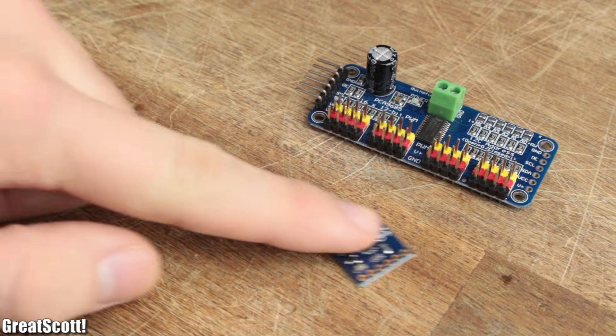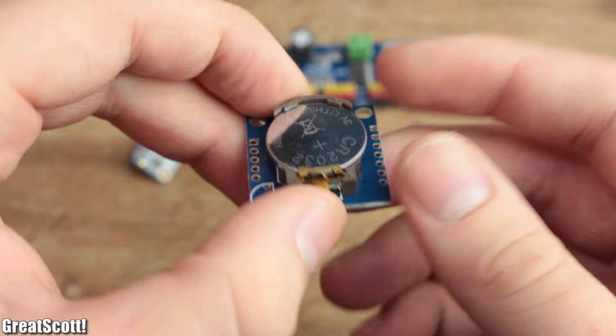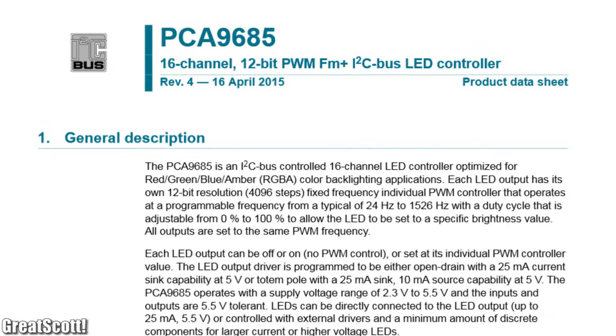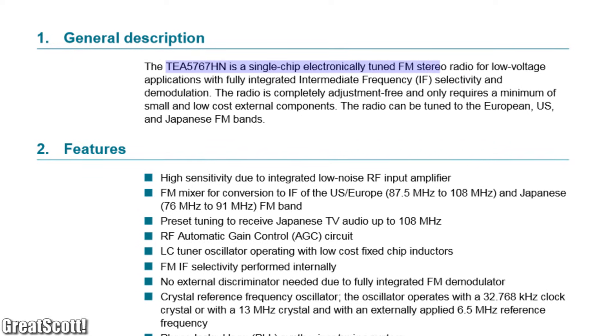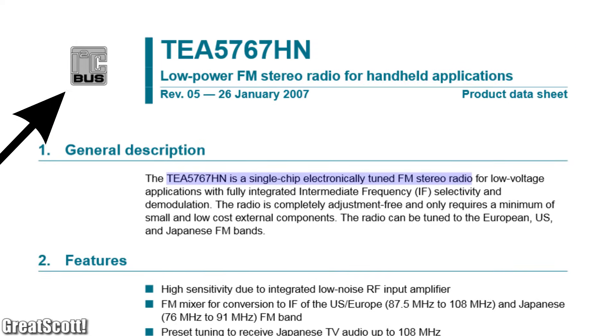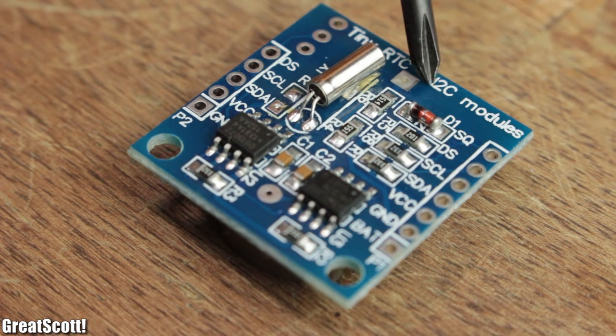If you've ever implemented a complex IC with many functions like telling you the exact date and time, expanding your I/O outputs with 16 12-bit PWM pins, or receiving your favorite FM radio station in your project, then you might be familiar with I²C, also known as two-wire interface. It is a popular communication protocol that allows